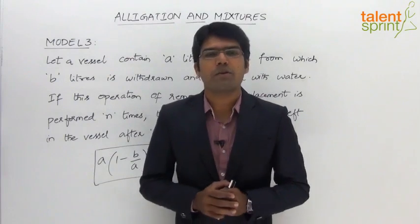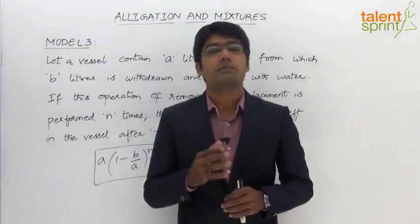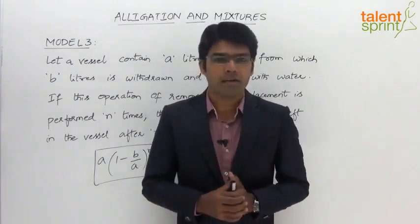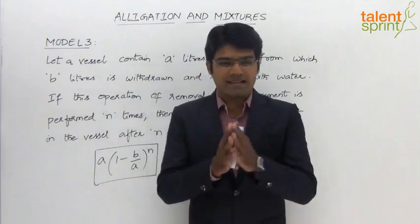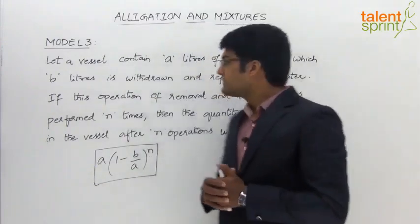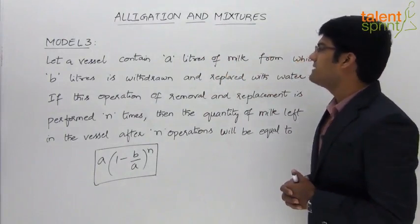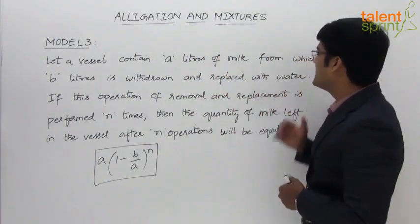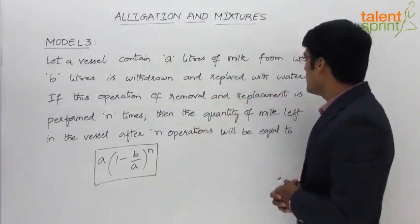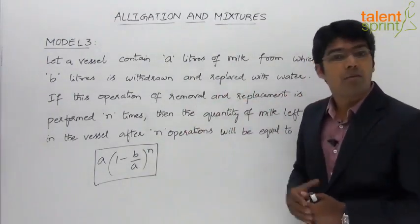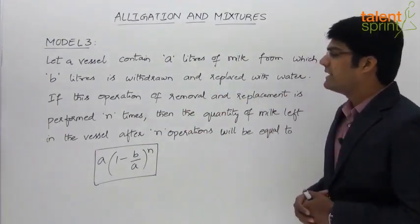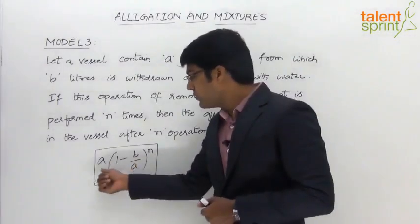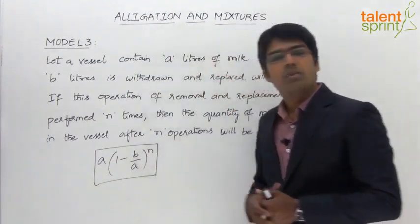Let us now take the third model from the topic of allegations and mixtures, which is based on the concept of removal and replacement of a given liquid with some other liquid for a given number of operations. The statement here is: let a vessel contain A liters of milk from which B liters is withdrawn and replaced with water. If this operation is performed n times, then the quantity of milk left in the vessel after n operations will be equal to A into (1 minus B by A) whole to the power of n.